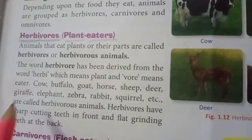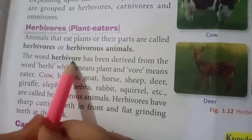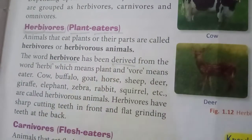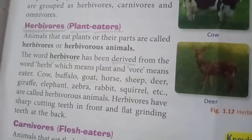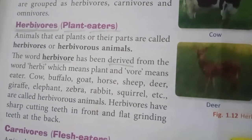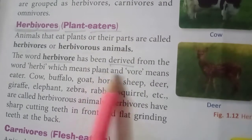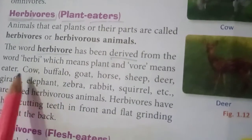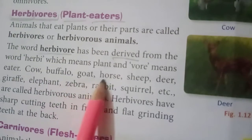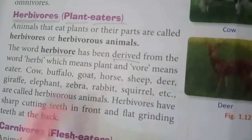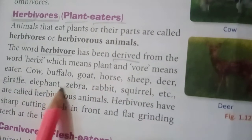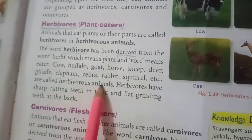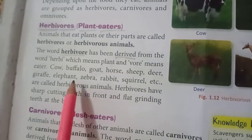Examples of herbivore animals include: cow, buffalo, goat, horse, sheep, deer, giraffe, elephant, zebra, rabbit, squirrel, and others.